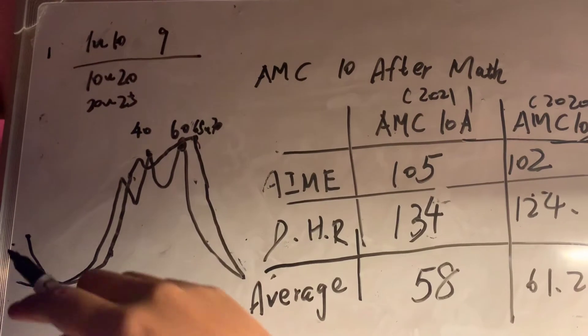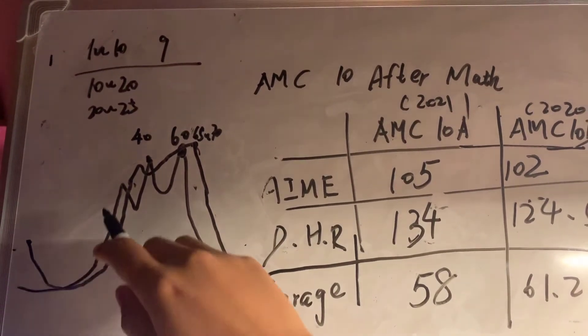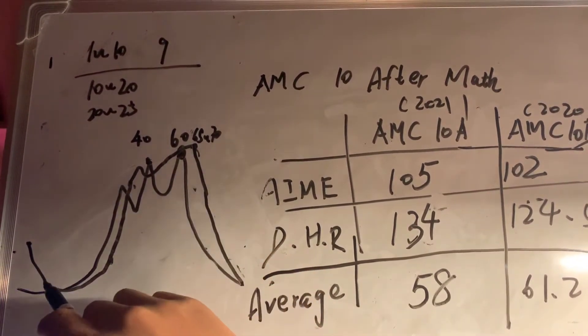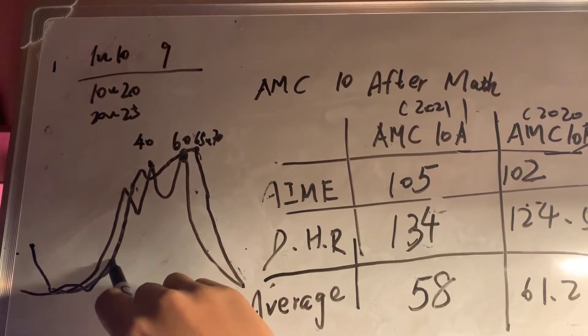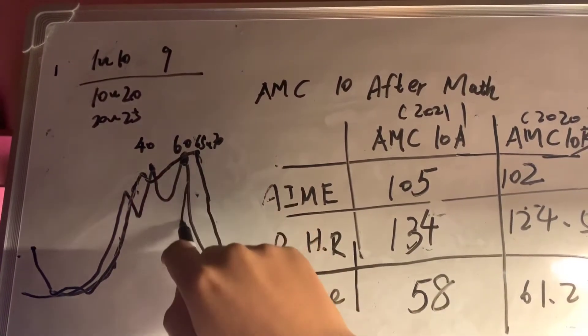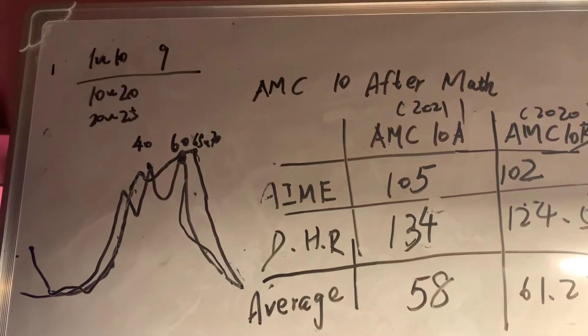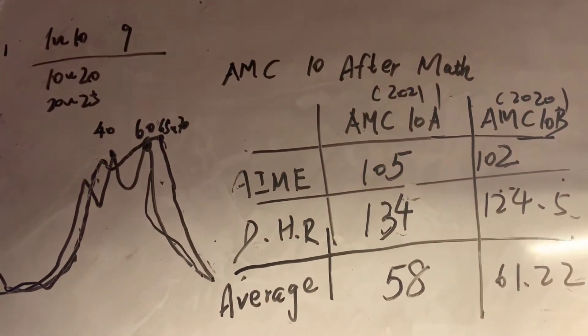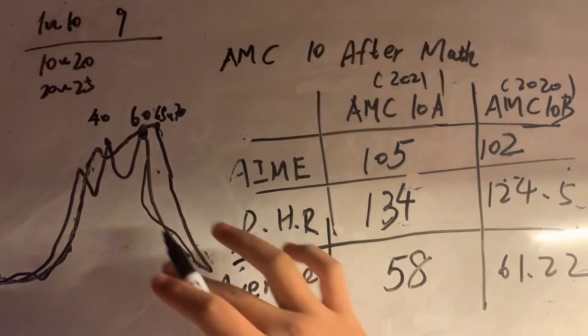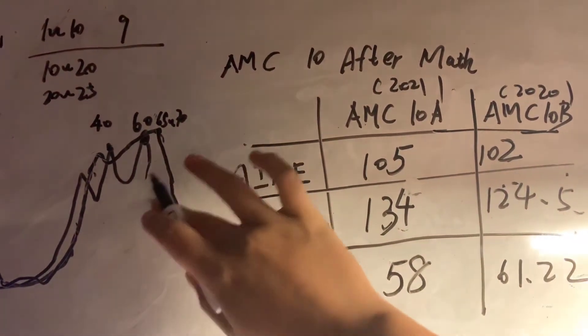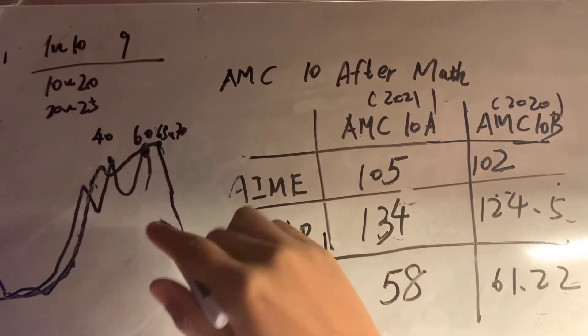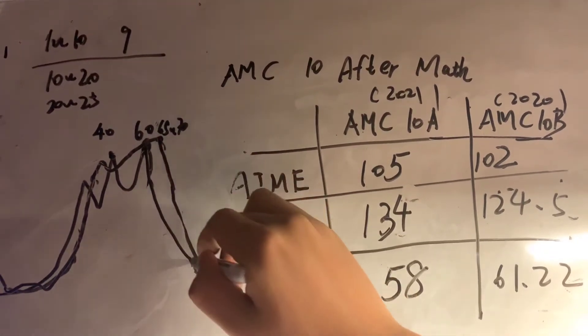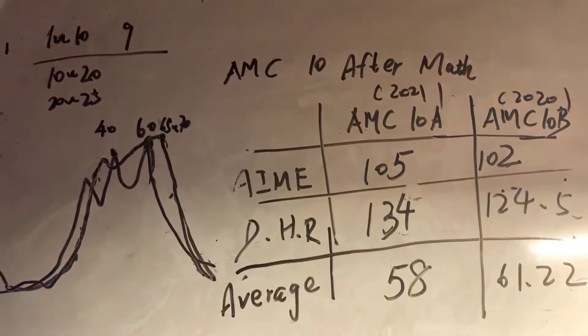This is the predicted graph for the 2021 score. And this is the actual graph for the 2020-10B. The reason I use 2020-AMC-10B instead of 10A is that AMC-10B has problem difficulty that is familiar with the AMC-2021-10A. Let's start.